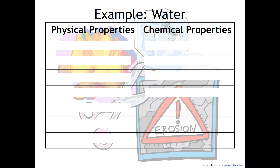Take a look at water. On the left-hand side you have physical properties, on the right-hand side you have chemical properties. You might want to pause this video to think of some physical properties and chemical properties of water before you continue. Physical properties for water — here are some things to consider. For example, water is colorless. I can observe that without changing the chemical identity of water.